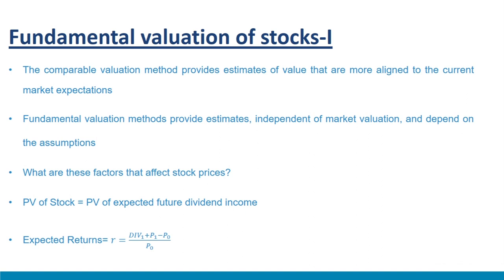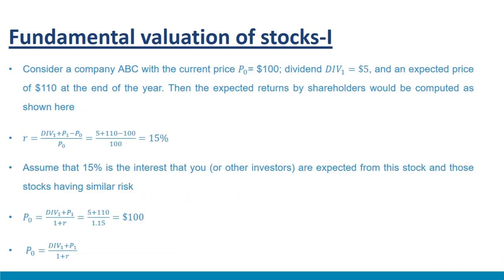Let us examine the discount rate R, often called the market capitalization rate or cost of equity capital — the returns expected by shareholders given the risk of the firm. All companies with the same risk face the same discount rate. Consider company ABC with current price P₀ = $100, dividends expected at year-end Div₁ = $5, and expected price P₁ = $110. Then expected returns R = (Div₁ + P₁ − P₀) / P₀ = (5 + 110 − 100) / 100 = 15%.